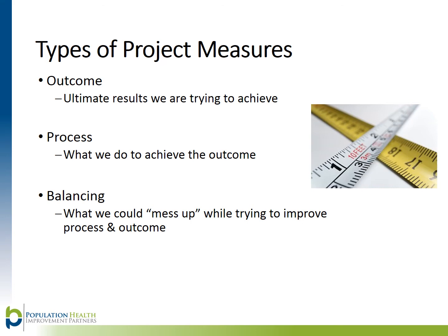Balancing measures are likely a new term for many of you. They are simply measures that check for the unintended consequences of change. Any time you make a change to a process or system, which are often complex and unpredictable, there is a good chance the change can affect other aspects of the process or system. Balancing measures address the question: are we improving some parts of the system at the expense of others? For example, when decreasing overall time of a clinic visit, you may want to keep a check on patient satisfaction. A patient may not be happy if you decrease their overall cycle time, but also decrease their face-to-face time with the clinician.